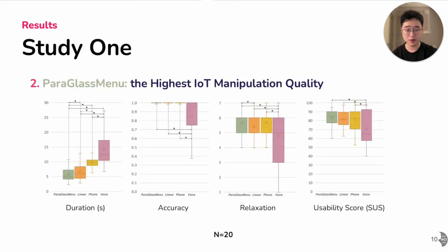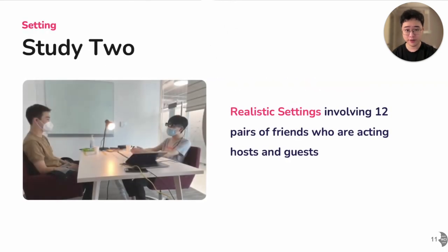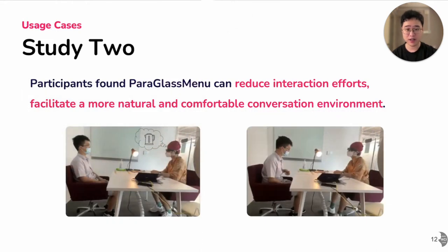Paragraphs Menu also enabled the highest IoT manipulation quality, supporting the least manipulation duration, the highest accuracy, relaxation, and usability scores. We further evaluated Paragraphs Menu in a more realistic setting involving 12 pairs of friends acting as host and guest in conversation. Participants found that Paragraphs Menu enables high quality IoT manipulation and conversation, helping them reduce interaction effort and facilitating a more natural and comfortable conversation environment.